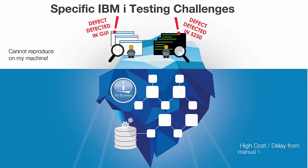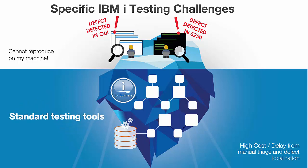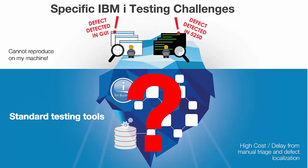UI tests, with manual localization of errors and laborious efforts to reproduce the error, can actually cause defects to propagate, which escalates resolution times and has an enormous triage cost.